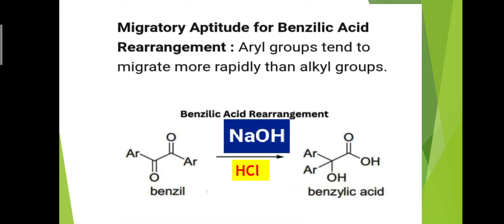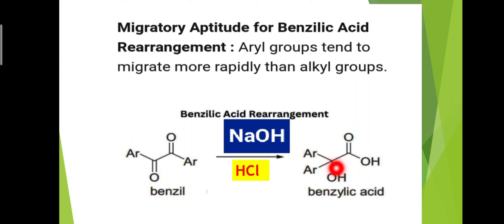Regarding migratory aptitude in benzylic acid rearrangement, aryl groups tend to migrate more rapidly than alkyl groups. When a 1,2-diketone is treated with NaOH, a salt of alpha-hydroxy carboxylic acid is first formed, which after acidic workup gives the alpha-hydroxy carboxylic acid.